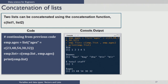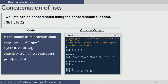Two lists can be concatenated using the concatenation function c(list1, list2). For example, to add an 'employee ages' attribute, create a new list m.ages containing the ages of 5 employees. Then concatenate m.ages with the original emp.list using c(emp.list, m.ages) and assign the result to employee.list. When printed, the new employee.list shows the additional 'ages' attribute appended to the original list.